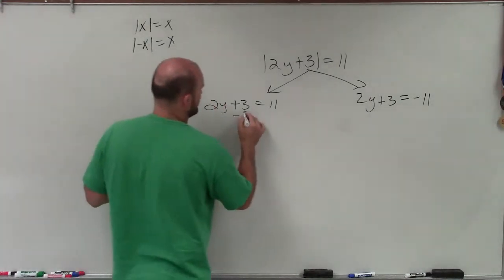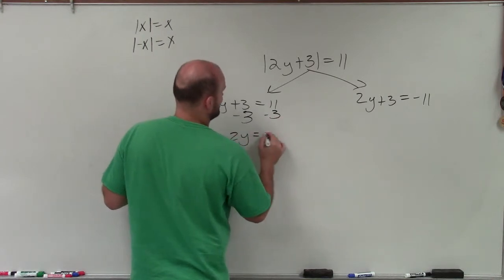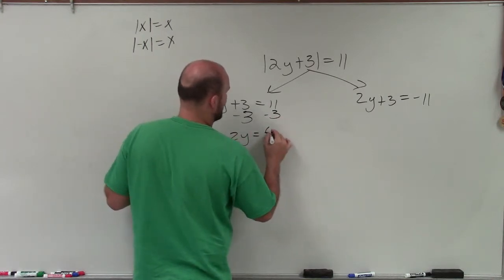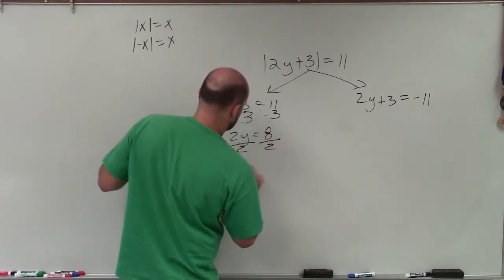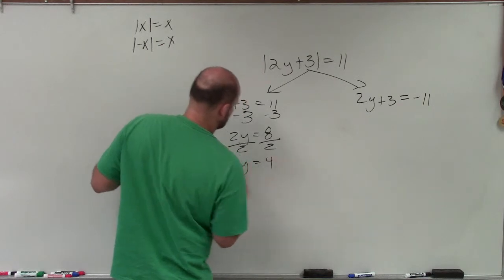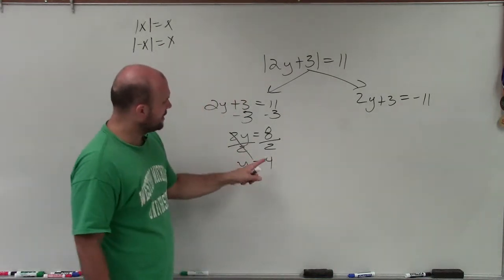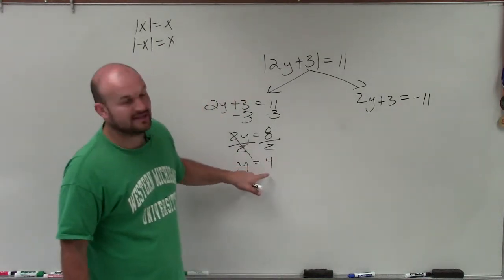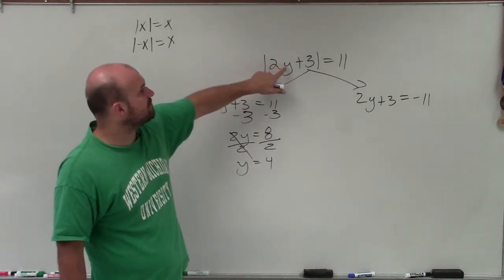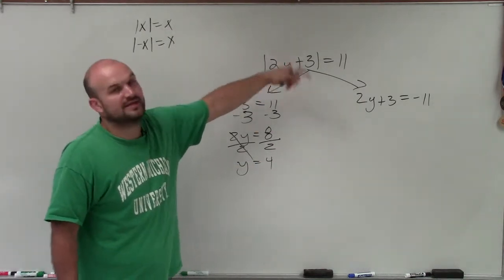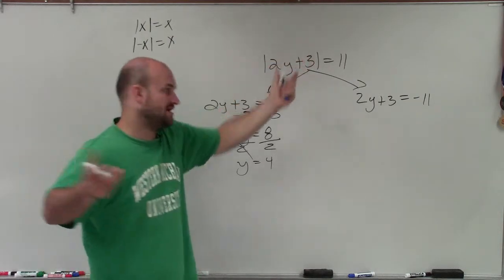Then we solve for both of them. So I subtract 3 from both sides: 2y equals positive 8. Divide by 2, and y equals 4. I can always go back, take that value, and plug it into my equation. 2 times 4 is positive 8; 8 plus 3 is 11; and the absolute value of 11 is obviously 11.